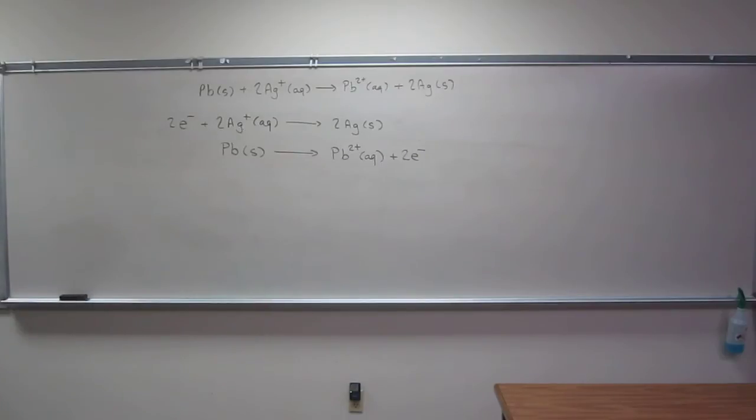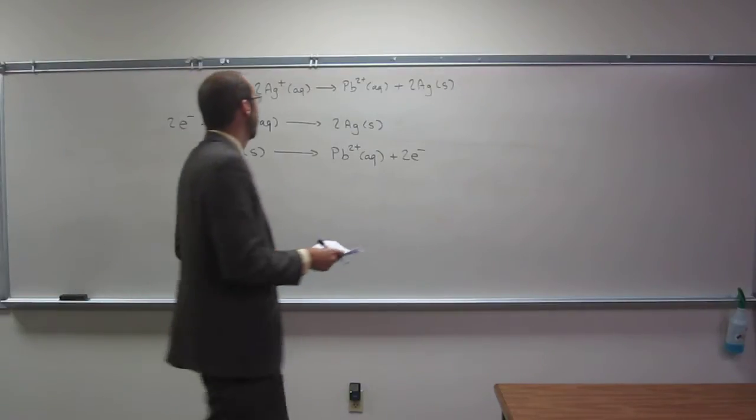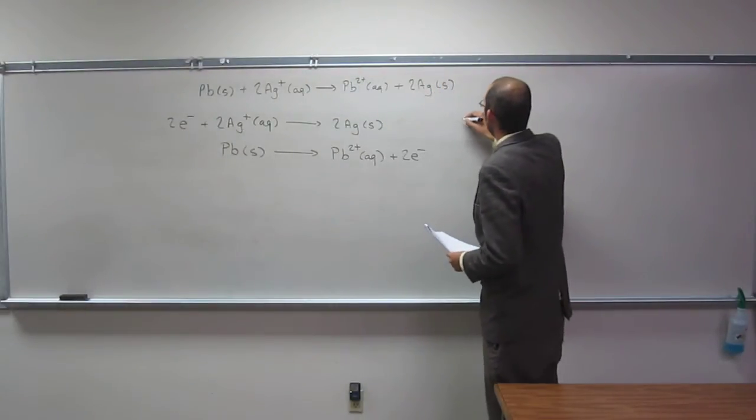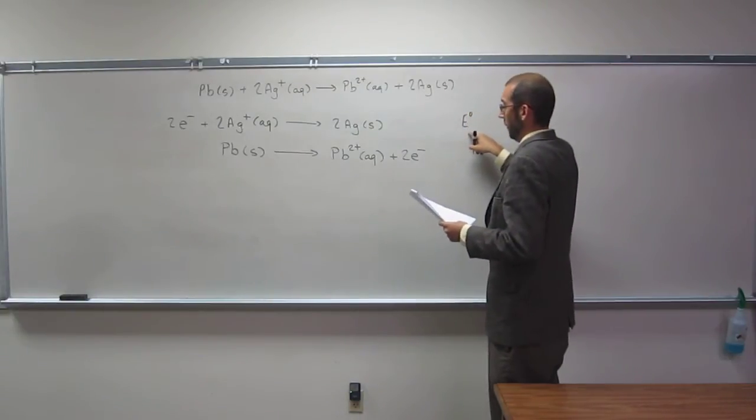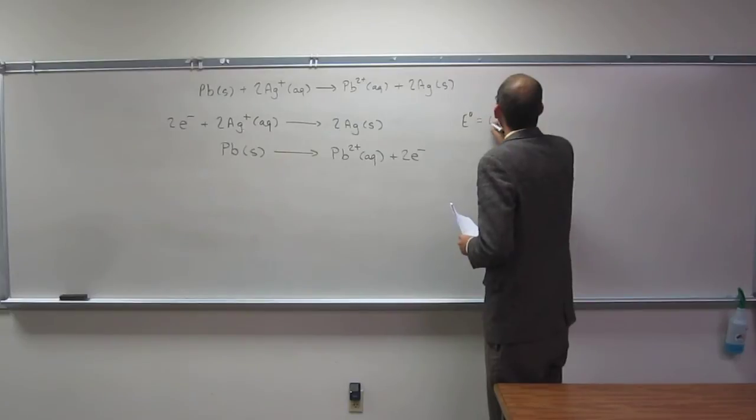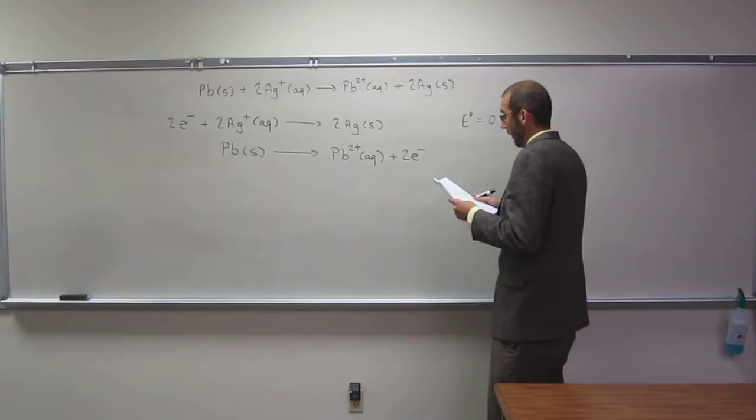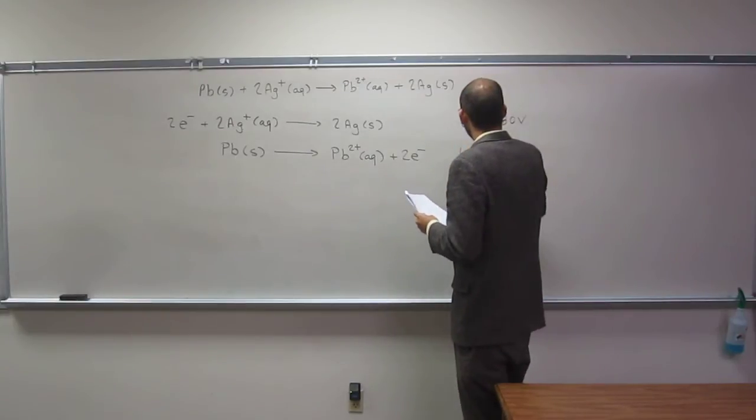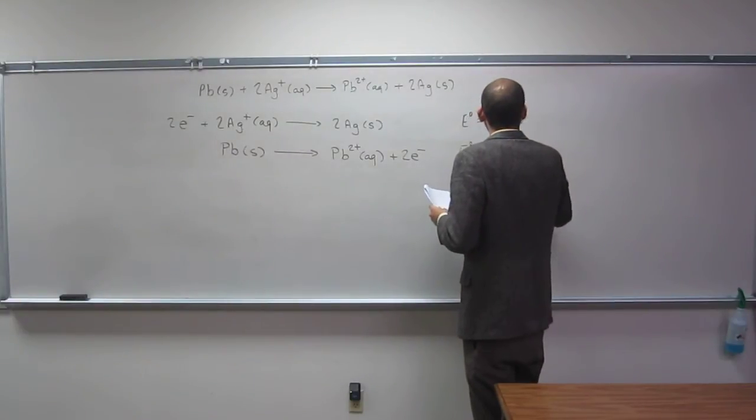So now, remember what I just said. You have to look at your table and find those electron potentials, or those cell potentials, or electrode potentials. So the electrode potential for this one is 0.80 volts. And for this other one, it's negative 0.13 volts.